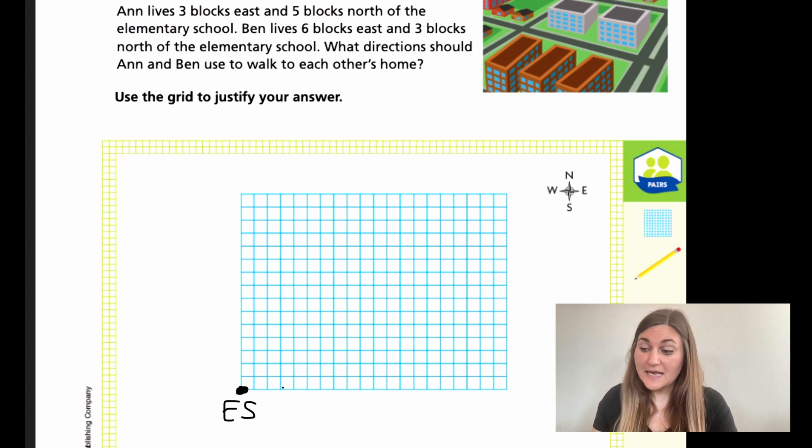But it says three blocks east and then five blocks north. And north is going up. So from my dot that I just marked, now I'm going to count five squares up and then mark my spot. One, two, three, four, five. I'm going to be right there, and that is going to be Ann. So I'm just going to mark it with an A.